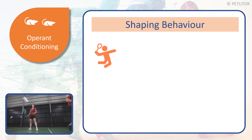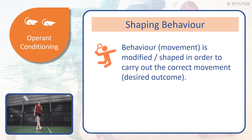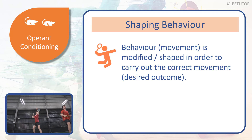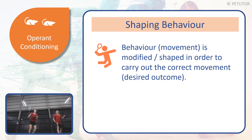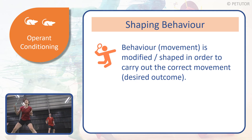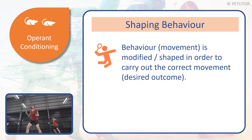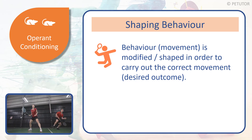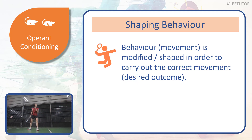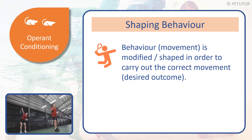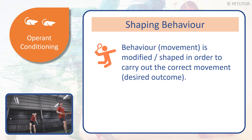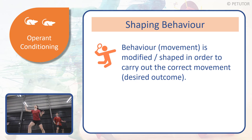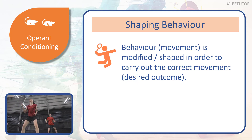In terms of what we need to know, shaping behaviour is the movement. The behaviour is the movement, and it's modified or shaped in order to carry out the correct movement. A good piece of terminology to use is to think about it as the desired outcome — what is it that we want the learner or the performer to do? In this case, it's the overhead clear. So that's the desired outcome, and we set up an environment to shape behaviour to eventually arrive at that required desired outcome.